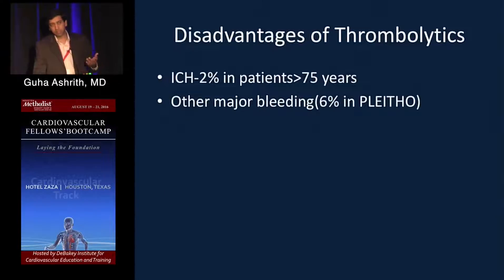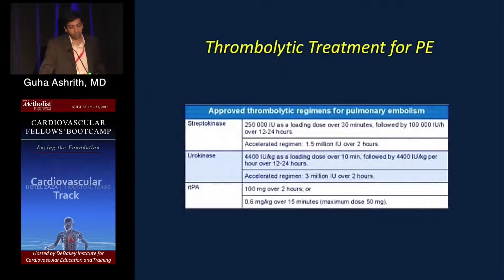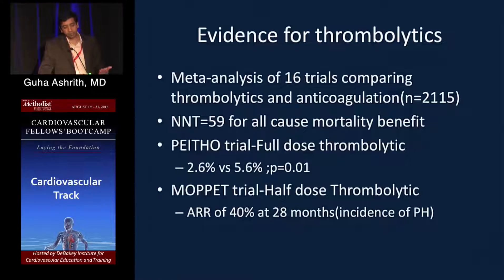The major disadvantage of thrombolytics is bleeding. Intracerebral hemorrhage exceeds 2% in patients over 75, and other bleeding reaches up to 6% in the PEITHO trial. TPA is available everywhere in the U.S.; streptokinase or urokinase are rarely needed. The PEITHO trial used a full dose of 100 mg over two hours with a bolus.